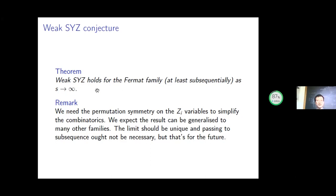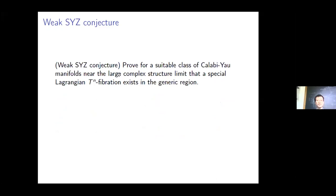The Strominger-Yau-Zaslow conjecture is roughly the following. You want to find a large enough class of Calabi-Yau manifolds where, in a particular degenerate limit called the large complex structure limit, a special Lagrangian torus fibration of half the dimension exists in a generic region. The big theorem about Calabi-Yau metrics is Yau's theorem, which says that if you give a compact Calabi-Yau manifold with a nowhere-vanishing holomorphic volume form and a Kähler class, there exists a unique representative satisfying the Calabi-Yau condition metrically.